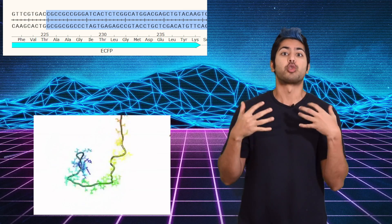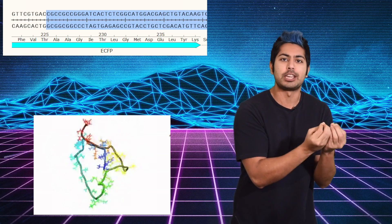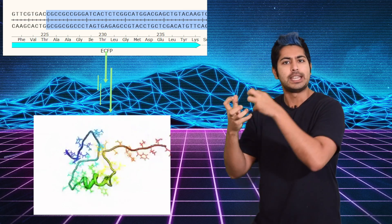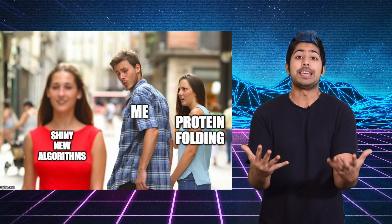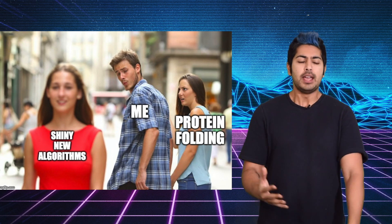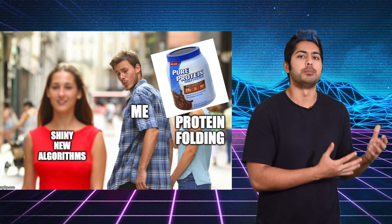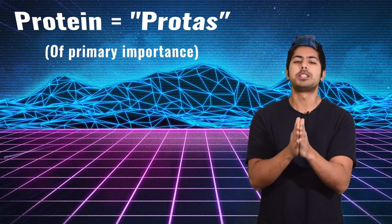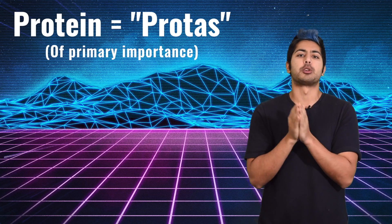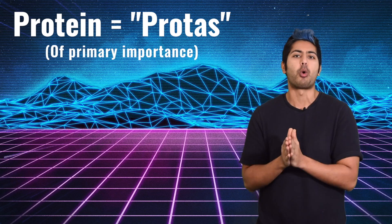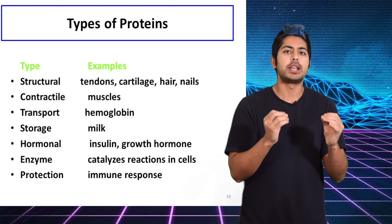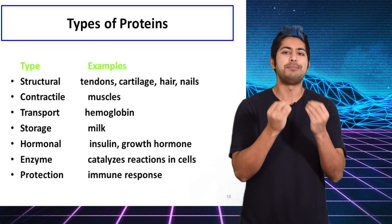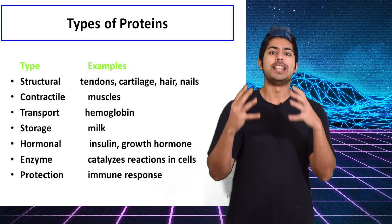For decades, biochemists have been trying to predict how a piece of genetic code will fold into a protein — a very intricate three-dimensional structure. This is called the protein folding problem. Most people, myself included, aren't thinking about this problem at all. In fact, for most of my life I just considered proteins to be a nutrient that helps build muscle. But it turns out that proteins are so much more important than that. The word protein is derived from the Greek word 'protas,' which means 'of primary importance.' And that's a perfect description because almost every biological process required to keep you alive is carried out by proteins.